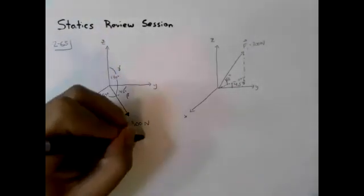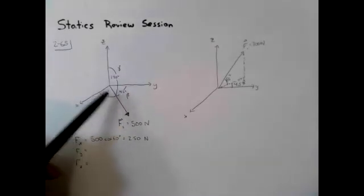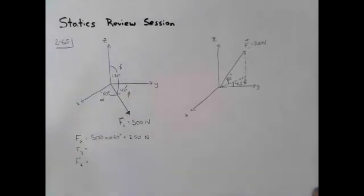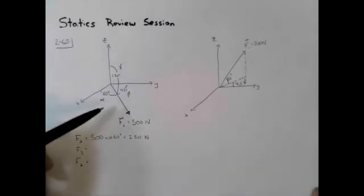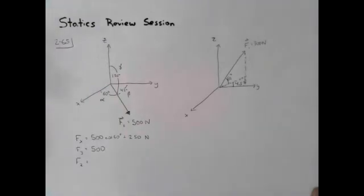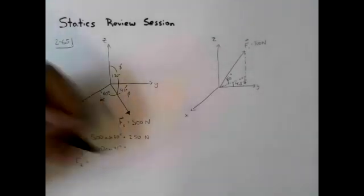So we have a magnitude of 250 in the x component. In the y component, we have a vector and we have an angle of 45 degrees between the vector and the y component. So really we calculate the y component the same way. It will just be cosine of 45.